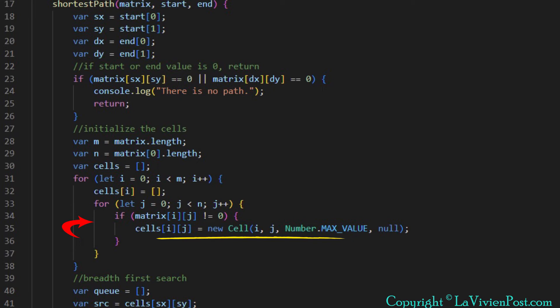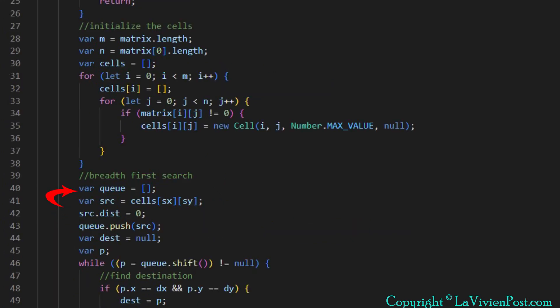And prev is null. Now we create an empty queue and enqueue the source cell. It has distance of 0. We also define two variables, type of cell. Dest will store the destination if it is found, and P is the pointer to current cell in process.